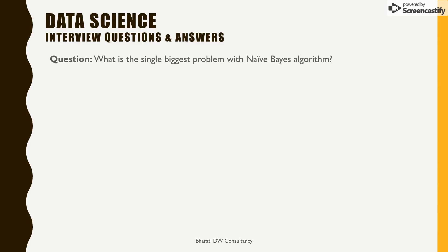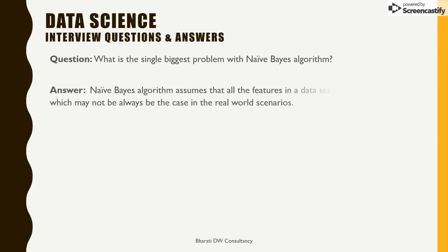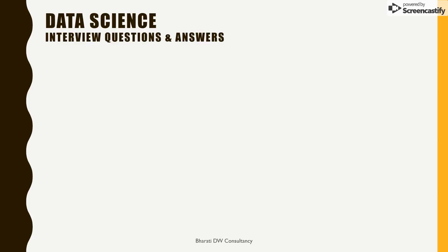Another question: what is the single biggest problem with the Naive Bayes theorem? One of the biggest problems is that it assumes all the features in the dataset are equally important, which may not always be the case in real-world scenarios. That is the biggest problem — it treats all features the same.